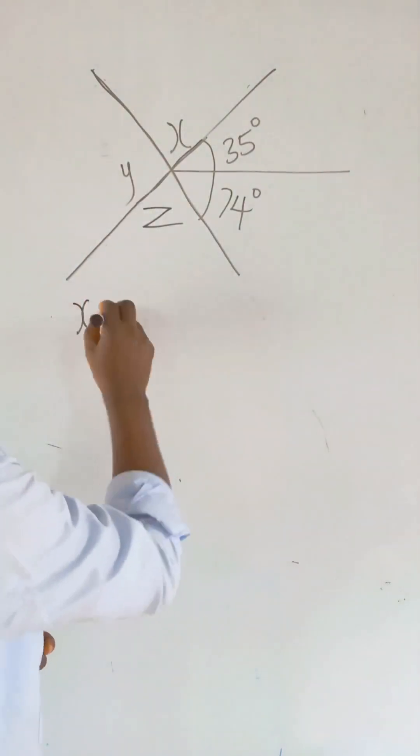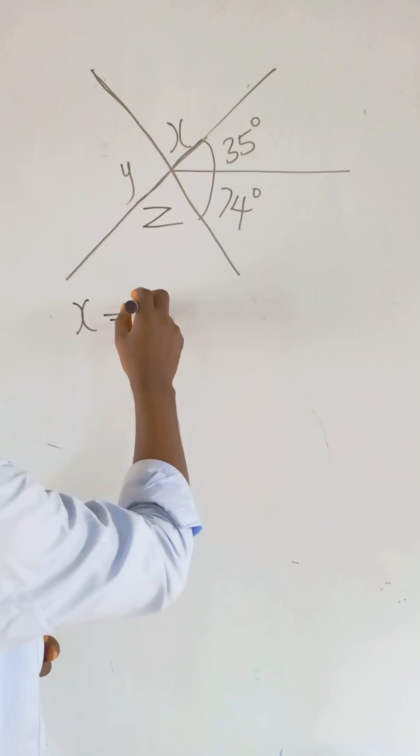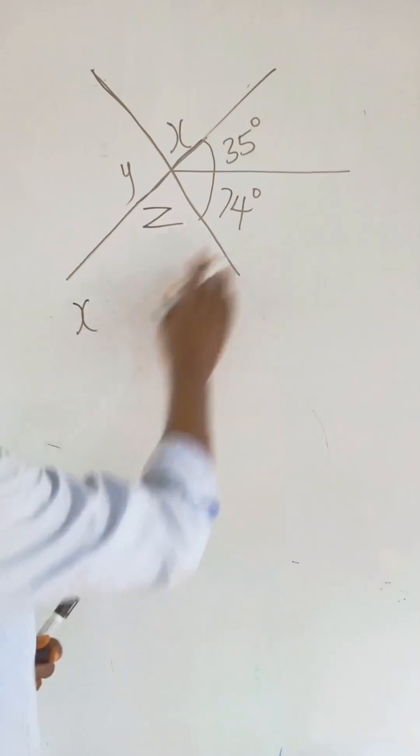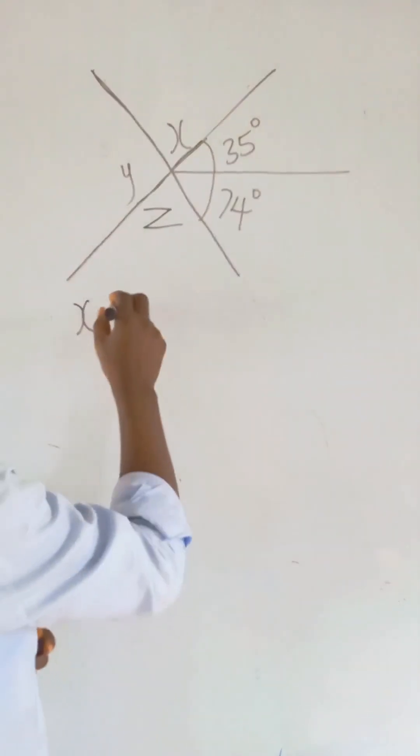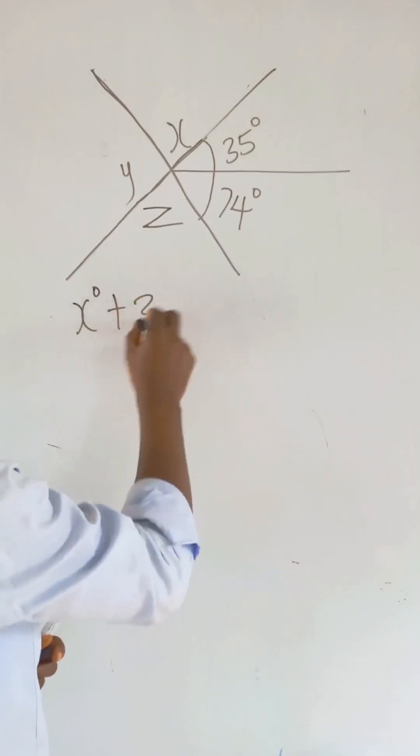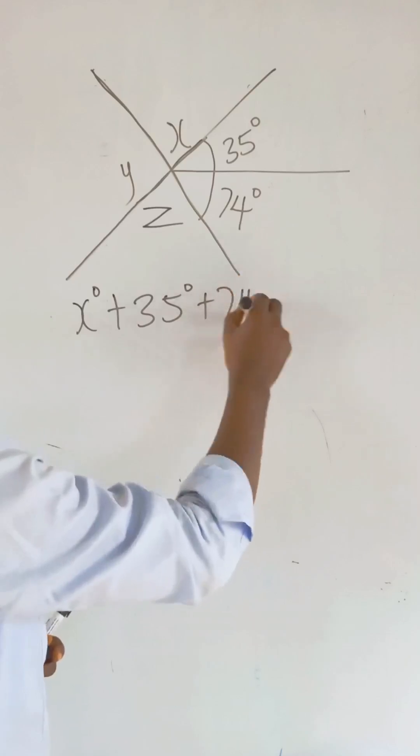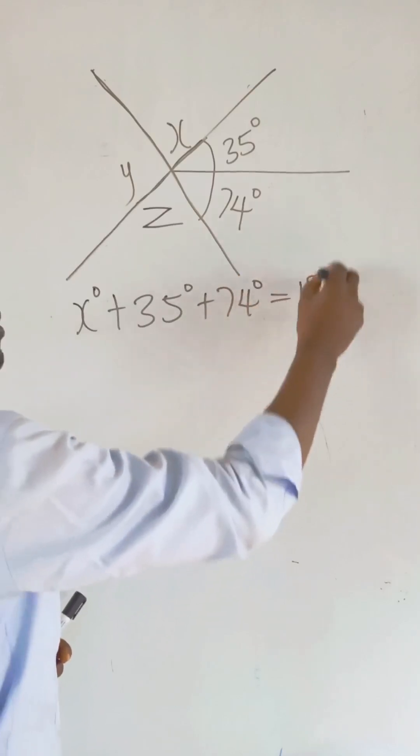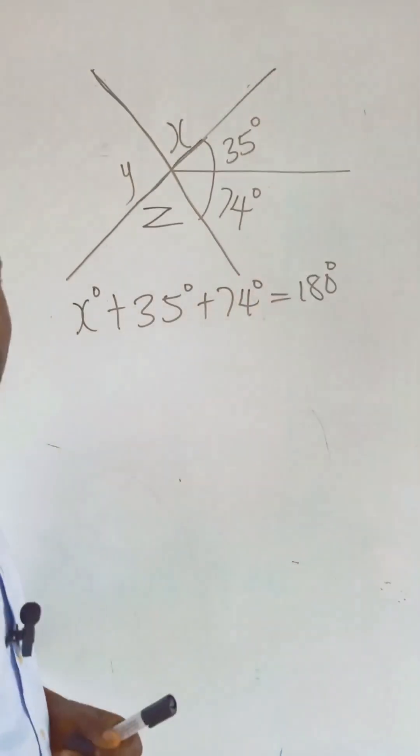We have our X to be, let's just take it like that. Let's sum it up to 180. X degrees plus 35 degrees plus 74 degrees equal to 180 degrees.